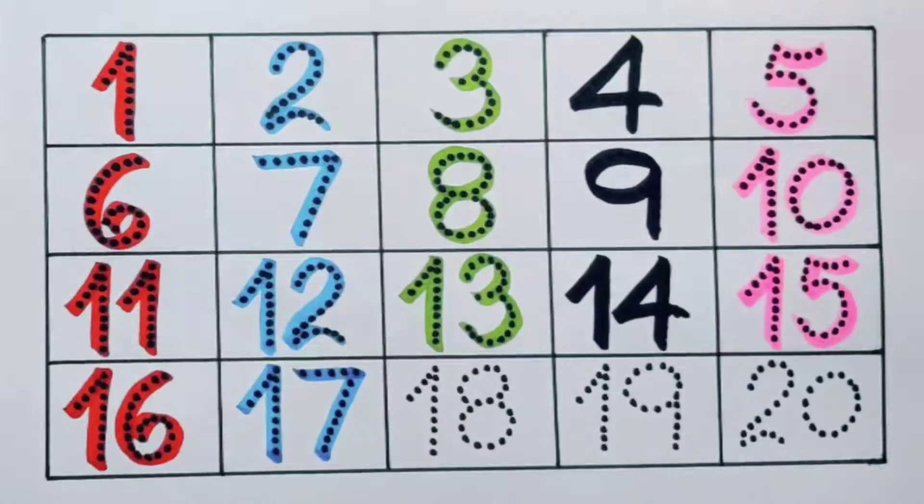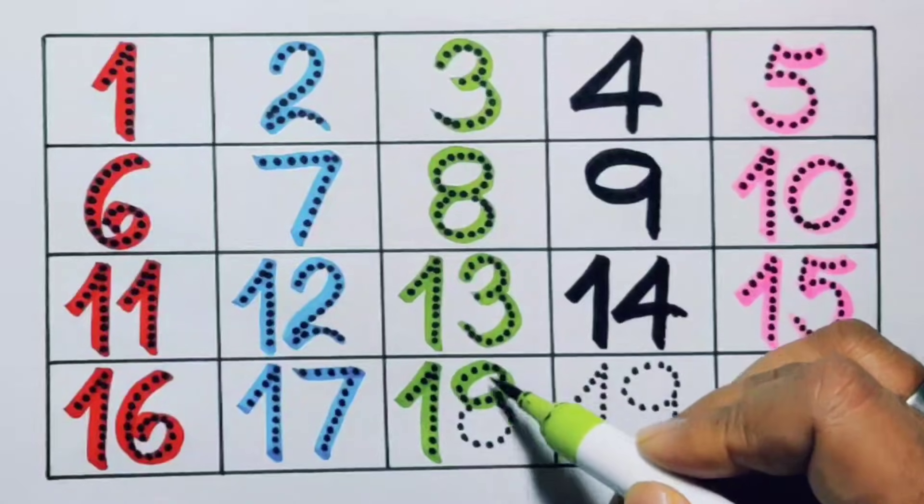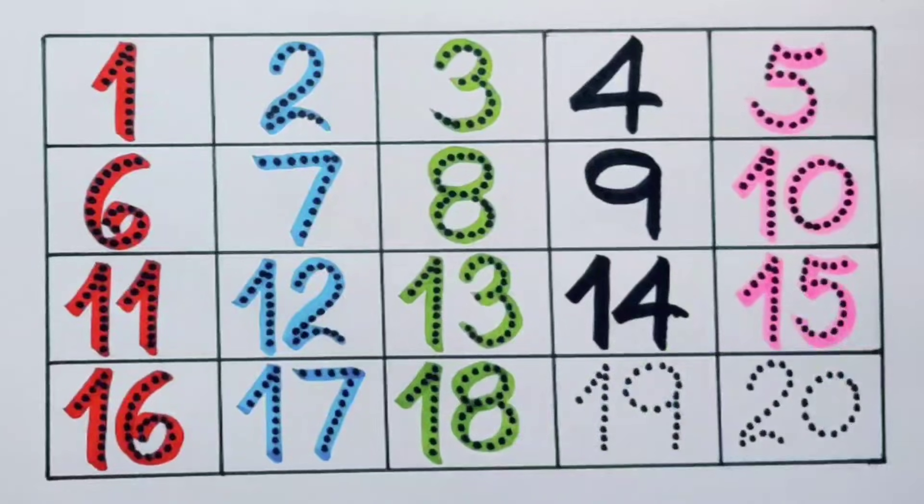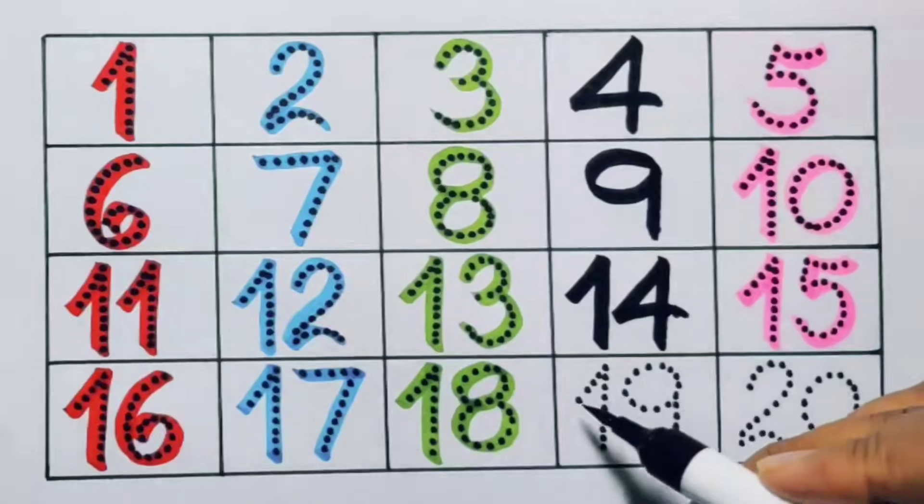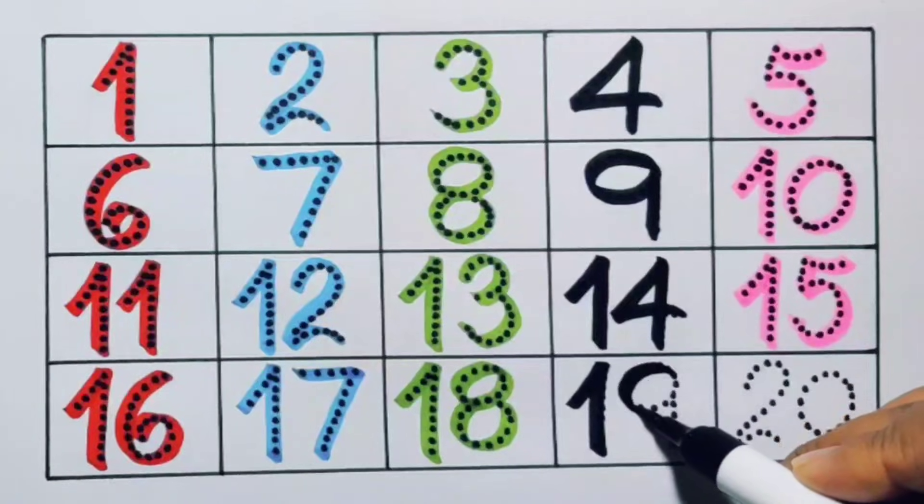Next kids, eighteen, one, eight, eighteen, number eighteen. Next kids, nineteen, one, nine, nineteen, number nineteen.